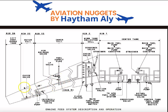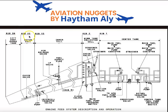Fuel goes by gravity from the outer cell to the inner cell. The collector cell is located between rib one and rib two. The inner cell is between rib two and rib fifteen. The outer cell is between rib 15 and rib 22, and the left vent surge tank is between rib 22 and rib 26.